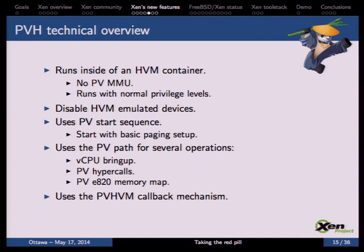Bringing up secondary CPUs on Xen is actually much simpler because you just have to use a hypercall. We also have to use PV hypercalls for tasks like fetching the memory map from Xen, since there is no emulated BIOS. It then uses the PV HVM callback mechanism to get interrupts from Xen.